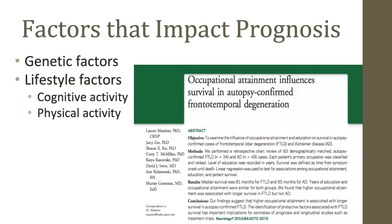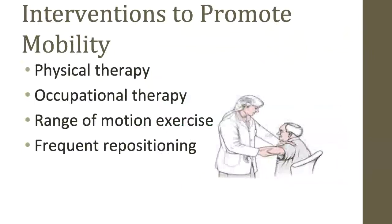Many people with FTD unfortunately gradually lose their ability to walk, and we can see complications arise like pressure ulcers, falls, constipation, and blood clots. Some things we recommend include a visit by a physical therapist and occupational therapist who can give advice about equipment like walkers to aid mobility. They can also teach families about range of motion exercises, which is a gentle stretching that can help maintain joint mobility and reduce painful contractures — a stiffening of the muscles and joints.